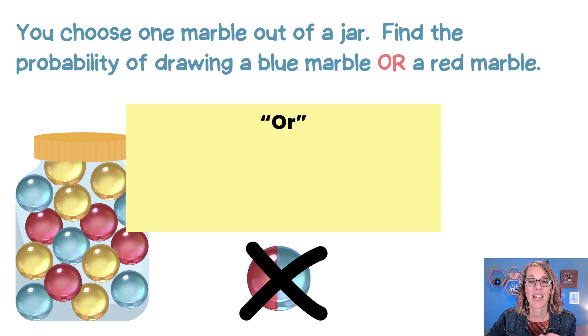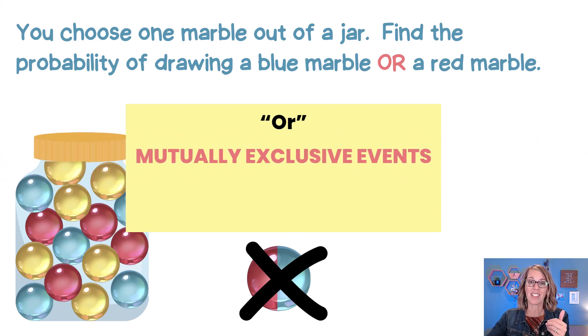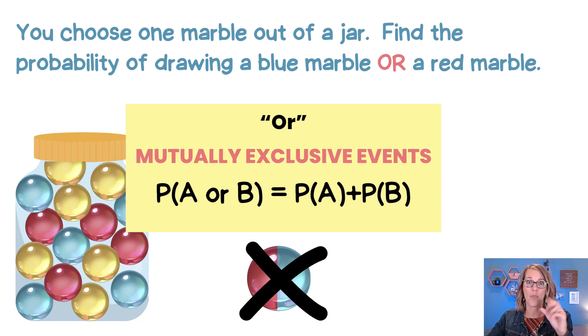That means that our two events are mutually exclusive and we get to use this form of the OR formula. It's the probability of A or B. Think of this as cases. It's the probability of A plus the probability of B.